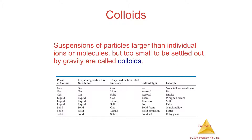An emulsion is two liquids inside each other. If you take olive oil and vinegar or olive oil and water and froth it, you emulsify the oil into the water. Eventually it will settle out and separate, but if you emulsify it before putting it on a salad, you get the oil and vinegar together. Milk is an emulsification because there are several different kinds of liquids in it. A sol is a liquid and a solid - something floating in a liquid that doesn't fall out; paint is an example.